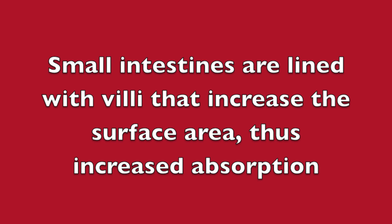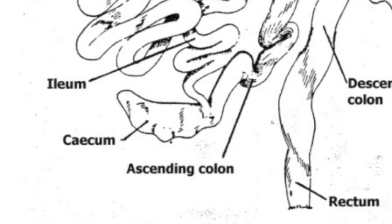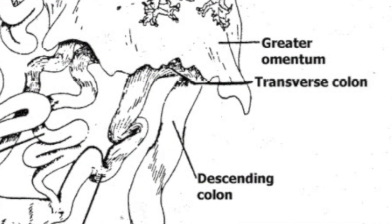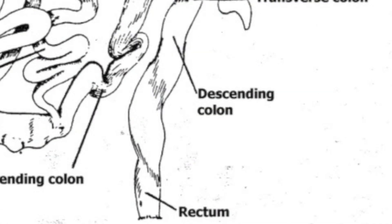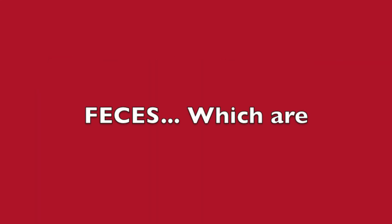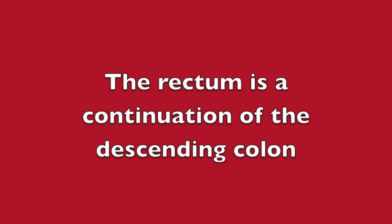The large intestine is divided into four different parts. The ileum of the small intestine opens up to the large cecum, which connects to the ascending colon on the right side, which connects to the transverse colon, and then last but not least, the posterior descending colon. The main function of the large intestine is to remove water from undigested material resulting in feces, which are stored in the rectum and eliminated from the anus. The rectum is a continuation of the descending colon.